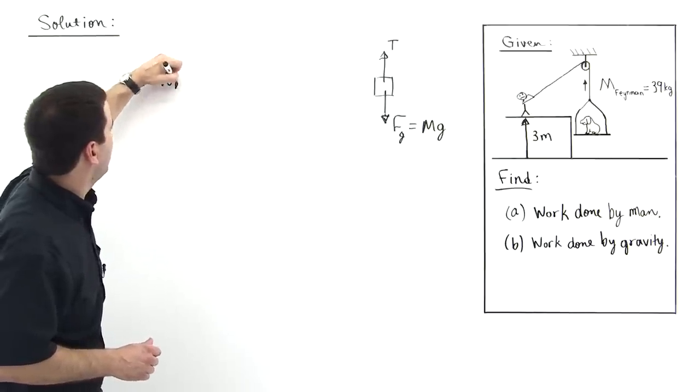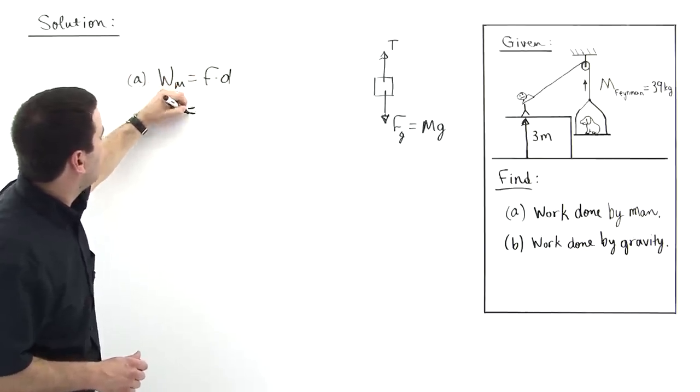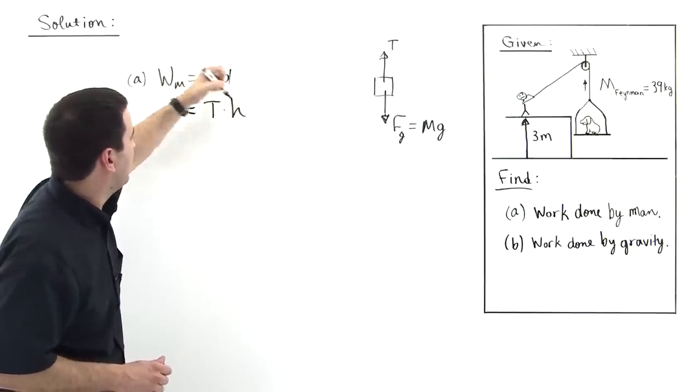So part A, we say the work due to the man is equal to the force times the distance. The force that he's exerting is this tension here, and he's pulling through a height. It's a positive work.